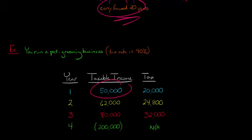You made $50,000, $62,000, $80,000. But then in year four, the pet grooming business collapsed. There was a catastrophe and you lost $200,000. Now you have a net operating loss, otherwise called an NOL. You have a net operating loss, so you don't pay any tax in year four. You lost money, so you're not going to be paying any tax.